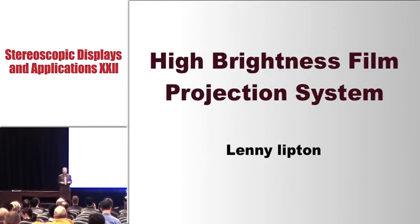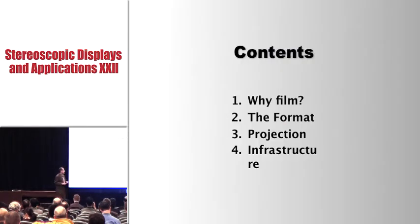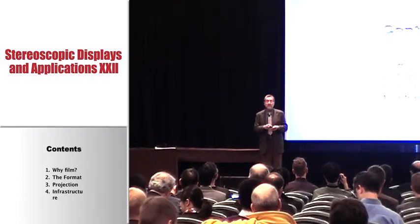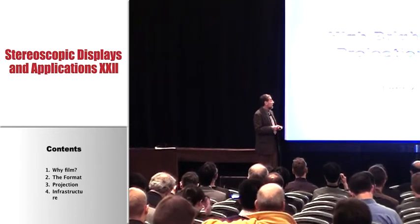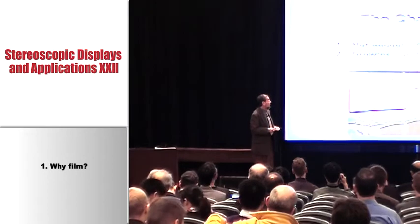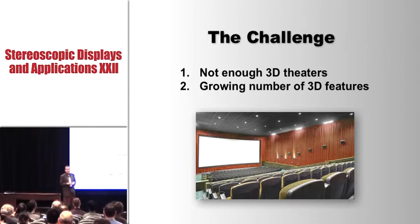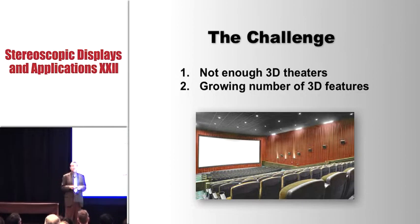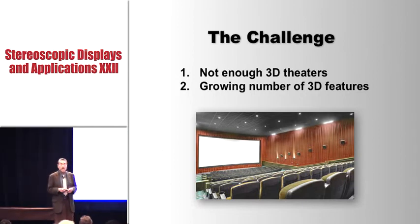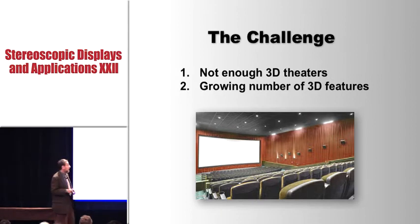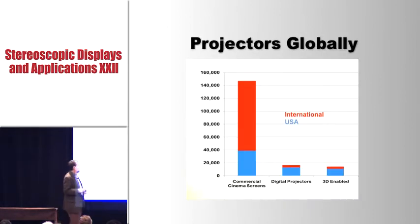I will explain why film. This is what I'm going to be covering: the film format, the projection system itself, and some comments about infrastructure. There are 149,000 motion picture screens in the world and about 20,000 digital projectors or digital projection screens in the world, and most of those are stereoscopic. You've got something like 35 feature films in the next 12 months in 3D.